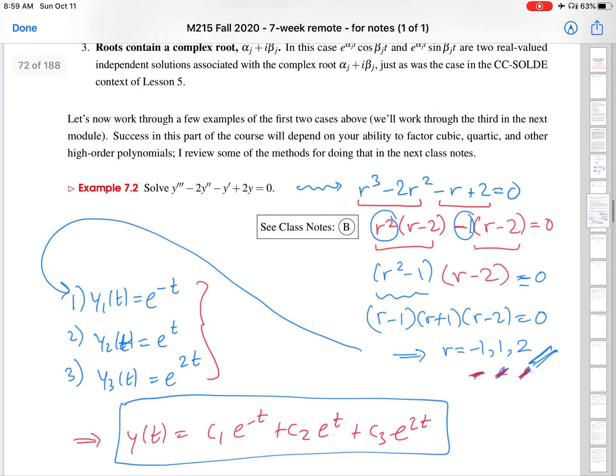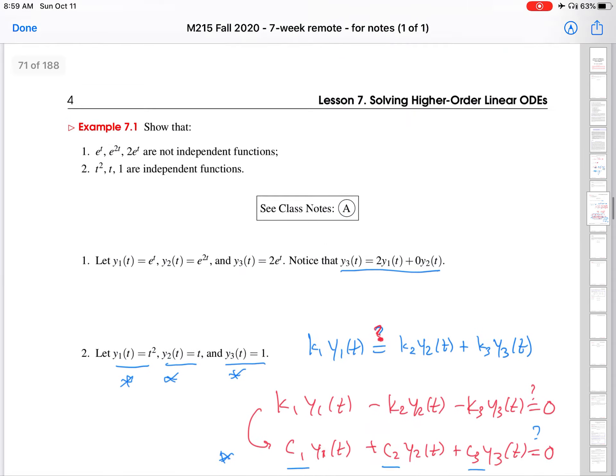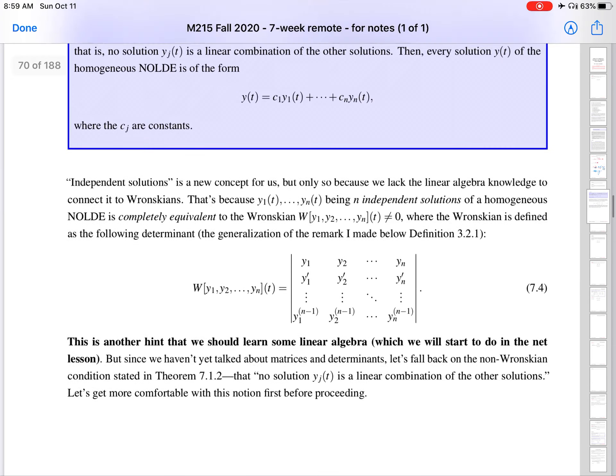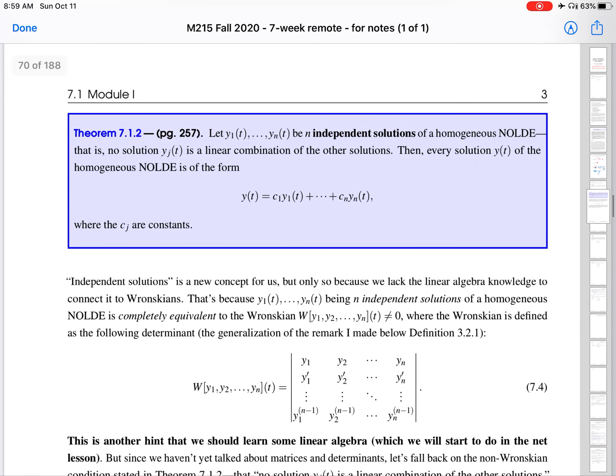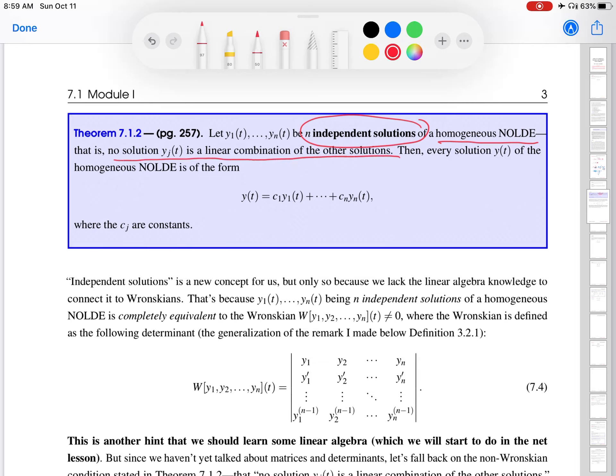So I want to scroll back to the theorem that tells us what the general solution looks like. And we talked about this in the previous video. Here it is. And let me just remind you of what that theorem says. So if I have a homogeneous nth-order linear ODE, and I have found n independent solutions, no solution is a linear combination of the others, then every solution has the form that we've been working with. So independent solutions.